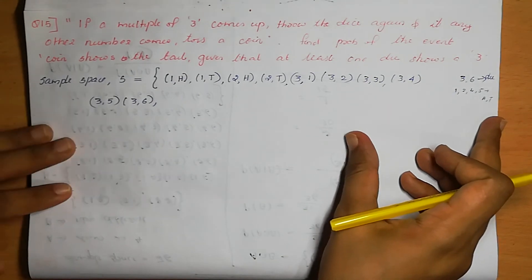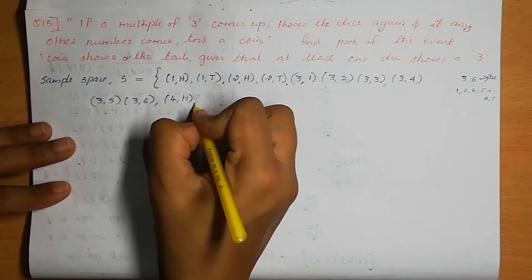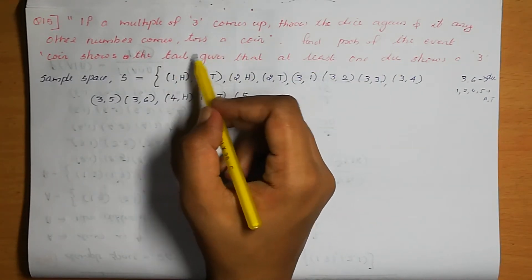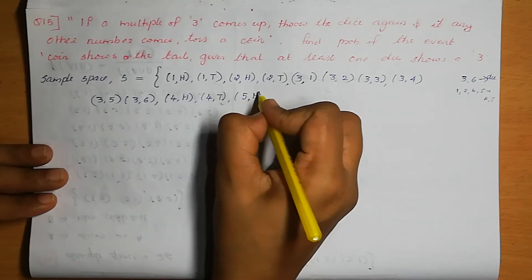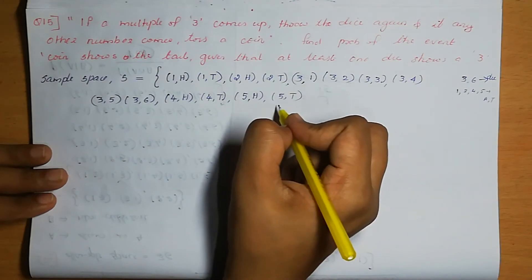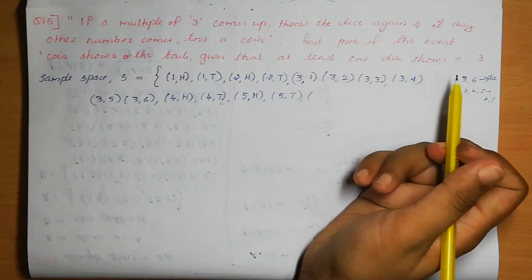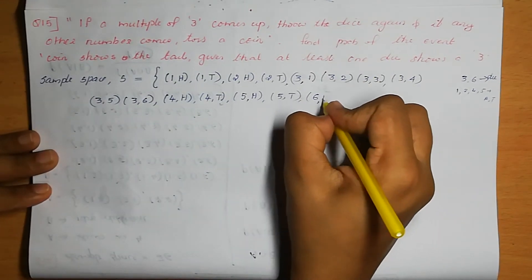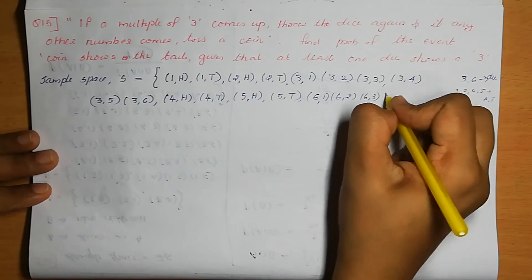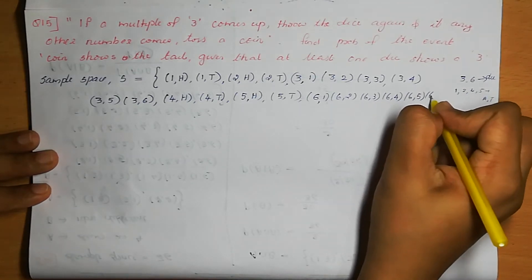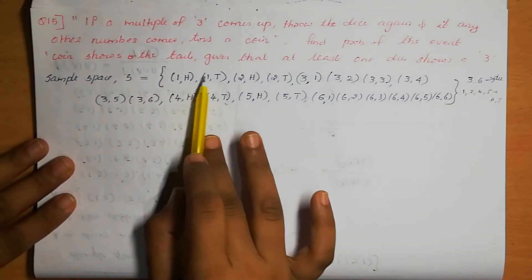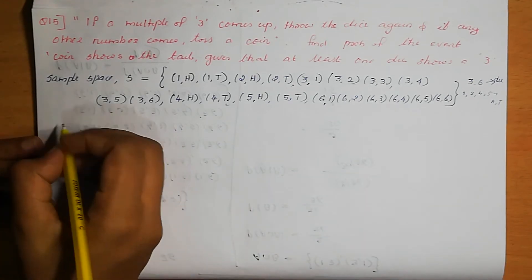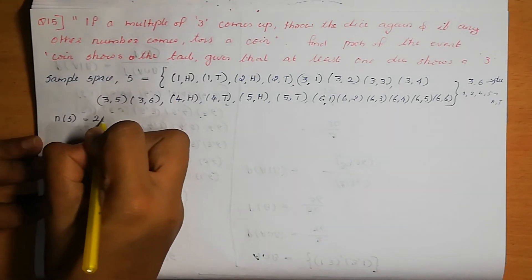Continuing the sample space: die shows 4 (not multiple of 3), toss coin → (4,H) and (4,T). Die shows 5, toss coin → (5,H) and (5,T). Die shows 6 (multiple of 3), throw die again → (6,1), (6,2), (6,3), (6,4), (6,5), (6,6). Total elements in sample space: n(S) = 20.